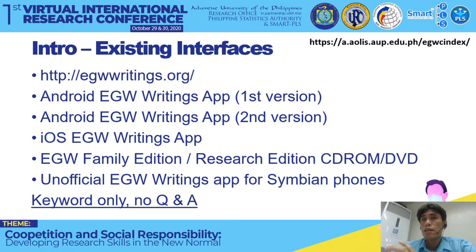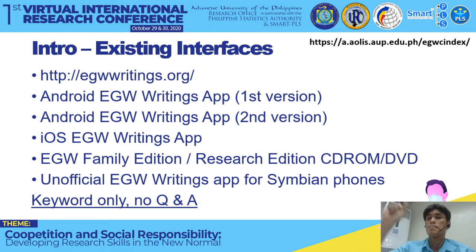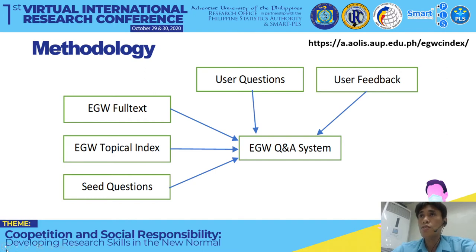What I wanted was something like what I found at OpenBible.info, where you can ask questions and people contribute answers. If you don't find good answers, you can suggest answers by entering a Bible reference corresponding to that question. The more people vote for that Bible reference, the higher it ranks in the list of answers for that specific question or topic. This is what I wanted to do also for EG White.